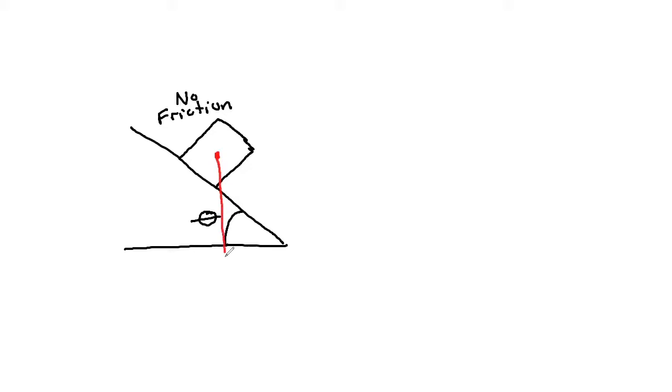One of those vectors is going to be the weight. Weight is always going to be there because you can't turn gravity off. Now the box wants to fall straight down to earth but it can't because the incline is in the way. So what's going to happen is we are going to have a direction of motion down the incline. And we're going to call that the component of the weight parallel to the incline, FG parallel.